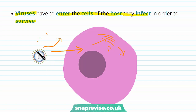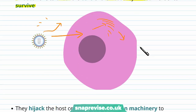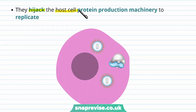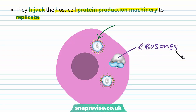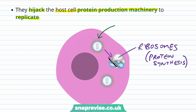The overall purpose of the virus is to replicate itself and spread as much as it possibly can. Viruses end up hijacking the host cell's protein production machinery in order to replicate. When a virus enters the cell it needs to make new proteins, so it uses the host's protein-making machinery — for example, the ribosomes, which are organelles involved in protein synthesis — in order to make more viruses.